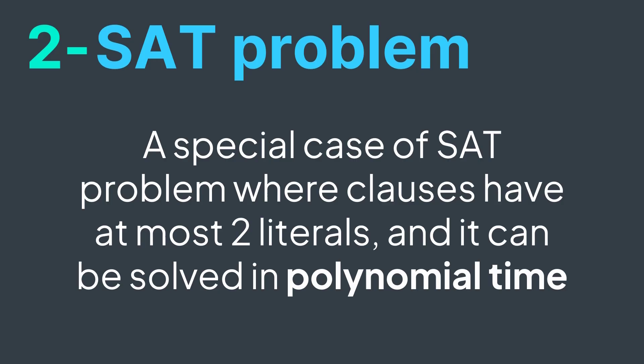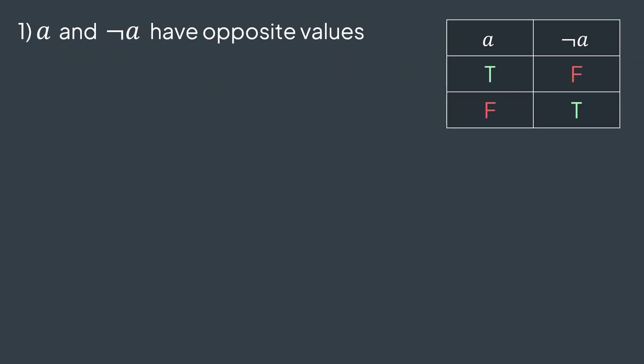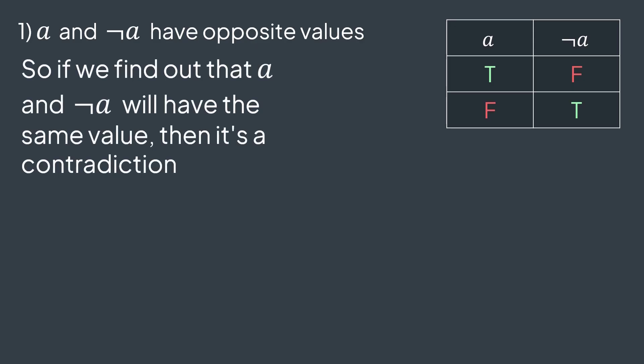Before we start, there are four things we need to understand about boolean logic. First: if a variable a has a value, NOT a will have the opposite value. For example, if a is true, NOT a will be false, and if a is false, NOT a will be true. So if we find out that both a and NOT a have the same value, then we have a contradiction, because it's impossible.